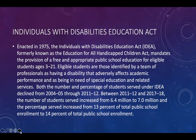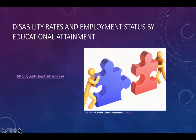This act was enacted in 1975 and it mandates the provision of a free and appropriate public school education for eligible students ages three to 21 — those identified as having a disability that adversely affects academic performance and being in need of special education and related services. The number and percentage of students served under IDEA declined from 2004 through 2011, but between 2011 and 2017, students served increased from 6.4 to 7 million, and the percentage rose from 13% to 14% of total public school enrollment.